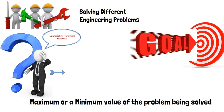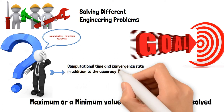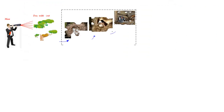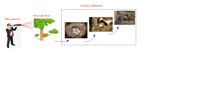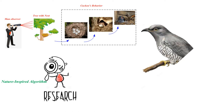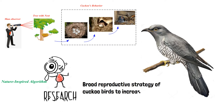Proper validation of optimization algorithms requires assessment of computational time and convergence rate, in addition to accuracy, to determine the minimum or maximum values. Some researchers have innovated optimization algorithms based on nature observations; these are known as nature-inspired algorithms. Since cuckoo search algorithm is also a nature-inspired algorithm, it is based on the brood reproductive strategy of cuckoo birds to increase their population.